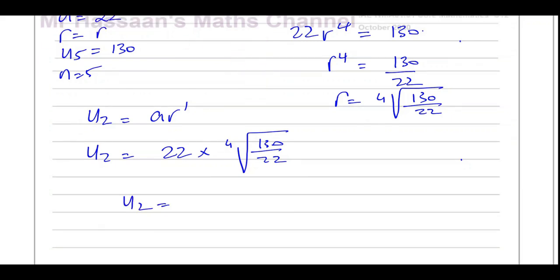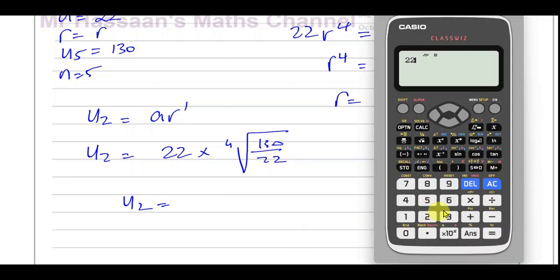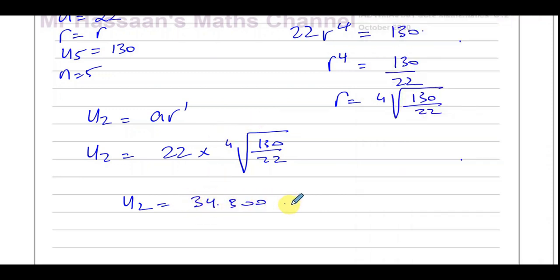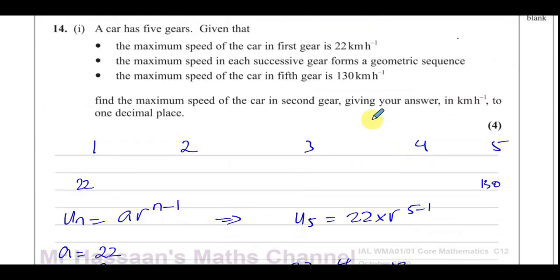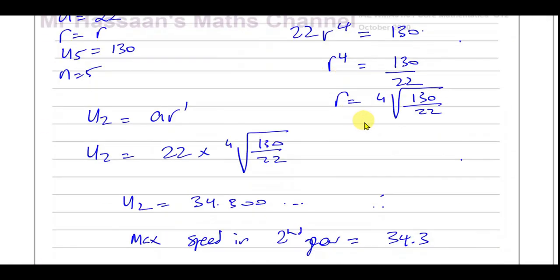It says give your answer to one decimal place, so it won't be an exact value. Let's use the calculator: 22 multiplied by the fourth root — using this button here — of 130 over 22. That gives us 34.300. So the maximum speed in second gear is 34.3 kilometers per hour.